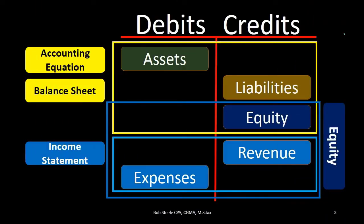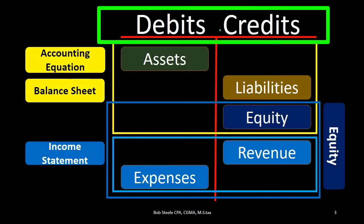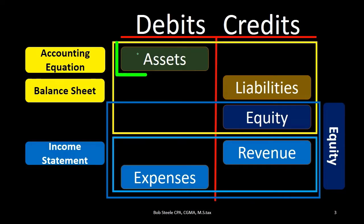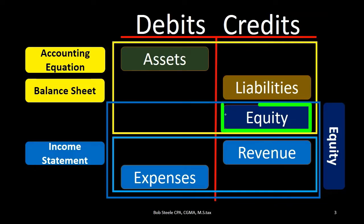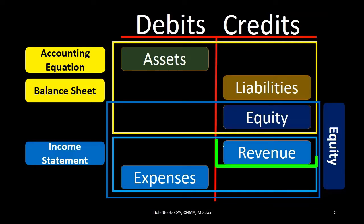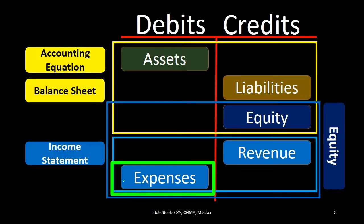Quick recap: we have the debits and credits here — this is our board. We just need to memorize that assets have normal debit balances, liabilities have normal credit balances, equity has a normal credit balance, revenue has a normal credit balance, and expenses have normal debit balances.